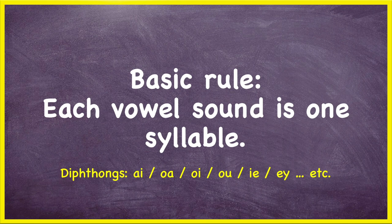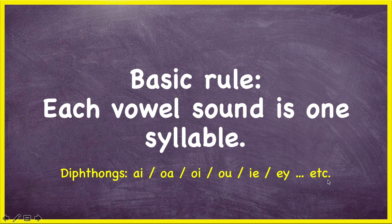We also mean diphthongs. A diphthong is when two different vowels are used together to create their own sound. It can also be three — you can have I-G-H, which makes a different sound. So it can be a vowel and a consonant as well. We've got I-G-H, O-W, E-R — there are a lot of different diphthongs, so that's why I've put et cetera here. That's the basic rule, but there's a lot more to it than that.